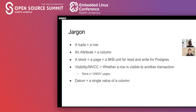There is some jargon we might be using very often. A tuple is a row. An attribute is a column. A block in Postgres is a page — it's an 8KB unit, 8K by default, configurable. In Linux, the kernel page will be 4K, but here it's 8K. Visibility in MVCC basically dictates whether a row is visible or not to another transaction, and we store this kind of information in undo pages in ZStore. Finally, a datum refers to a single value of a column.